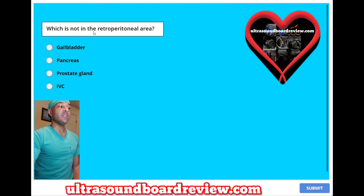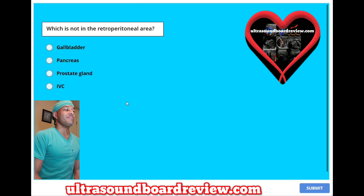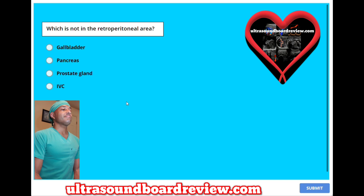Which is not in the retroperitoneal area? A. Gallbladder. B. Pancreas. C. Prostate gland. Or D. IVC. The answer is A. Gallbladder.